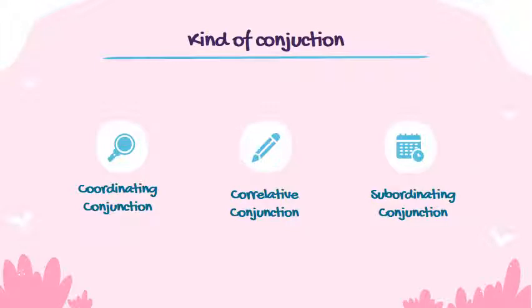Kinds of conjunction. There are three conjunctions. First is coordinating conjunction. The second is correlative conjunction. And the last is subordinating conjunction.